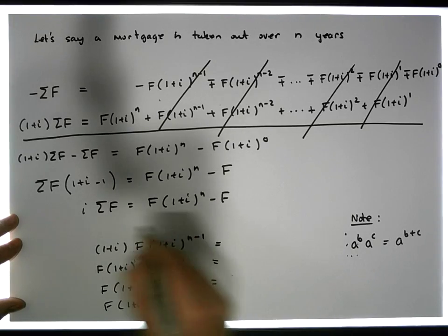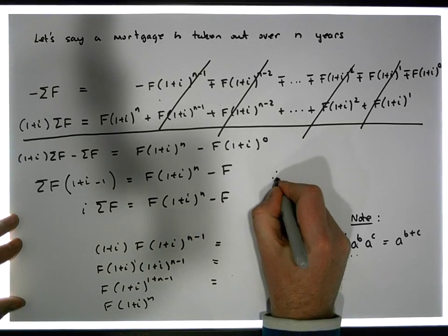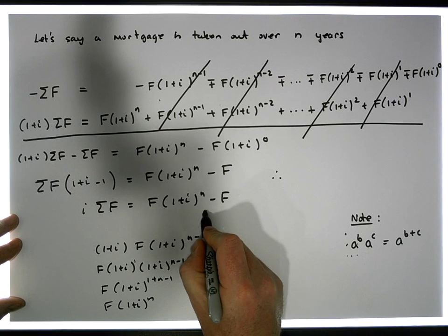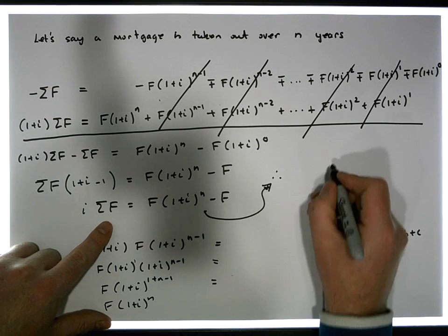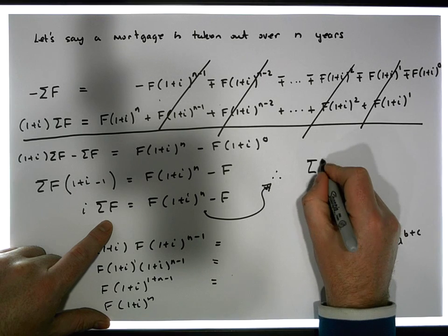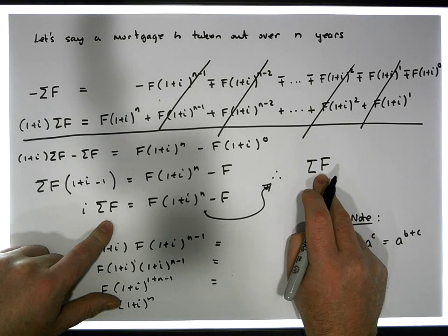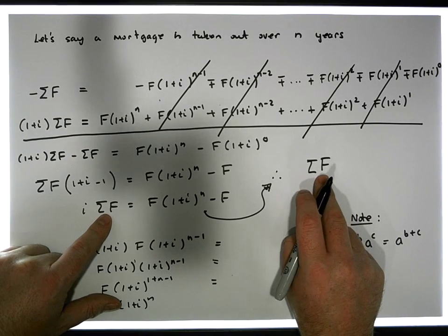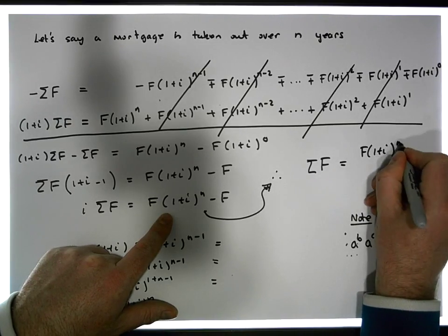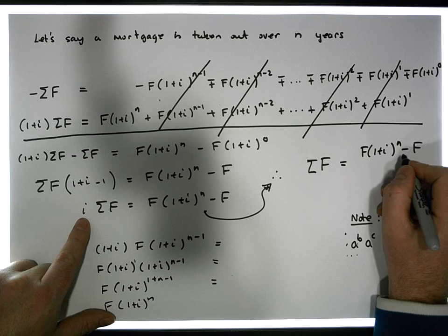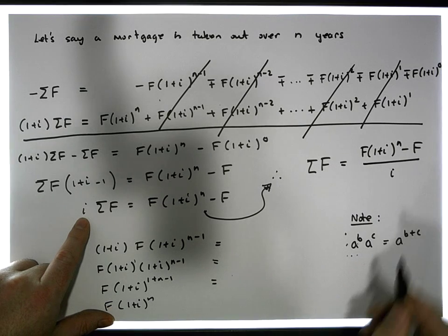And what we really have here is therefore, what we have from here is we have divided across by i that the accrual, the sum of all the repayments with the interest that's to be allocated to it is equal to F times one plus i to the n minus F divided by the interest rate. So actually,